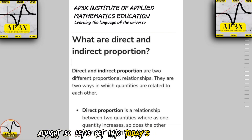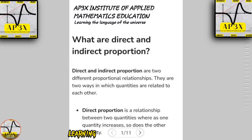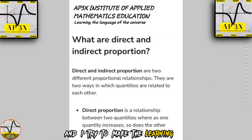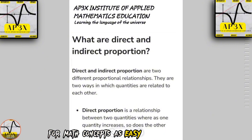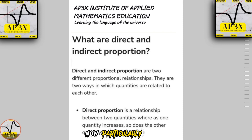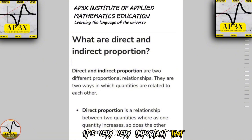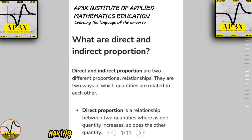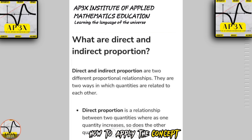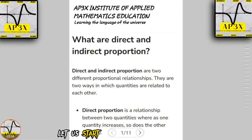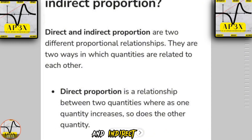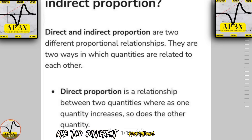Let's get into today's lesson. I try to make the learning process for math concepts as easy and as interesting as possible. We like to start off learning any concept in math with definitions — it's very important. Having an intuitive understanding of the concept really helps a student know how to apply it. So firstly, let's define what direct and indirect proportion are. They are two different proportional relationships — two ways in which quantities are related to each other.